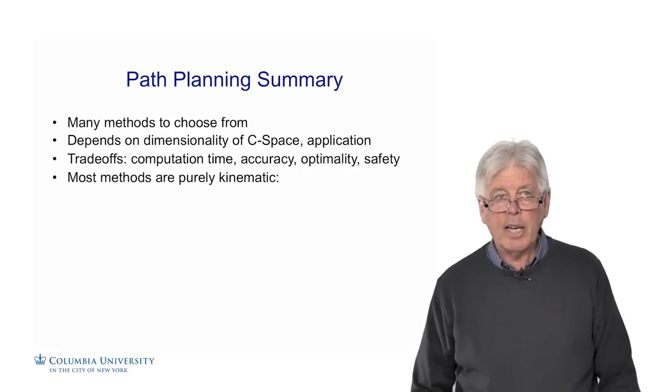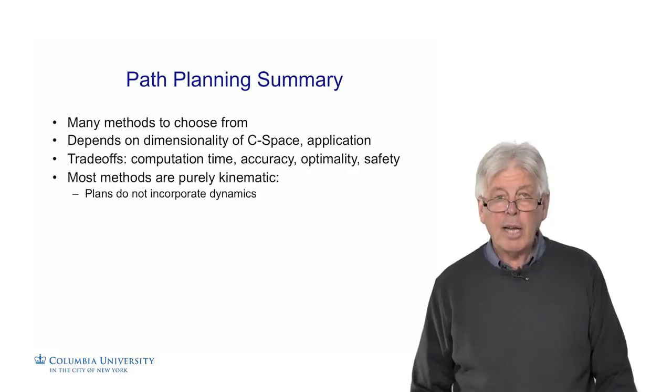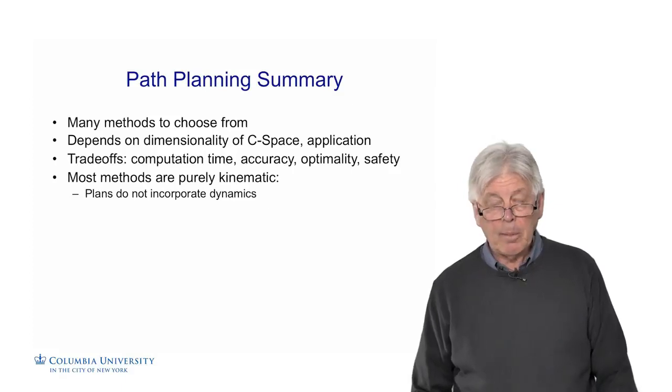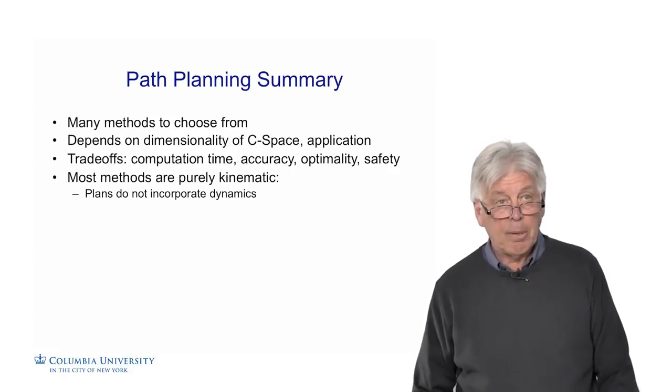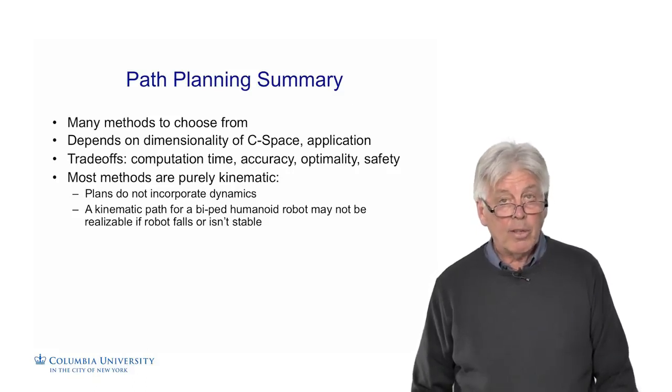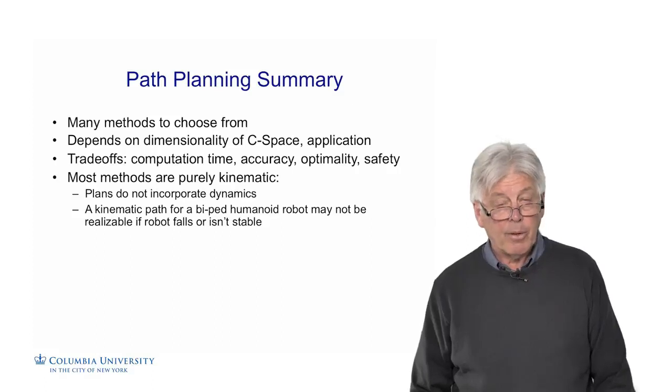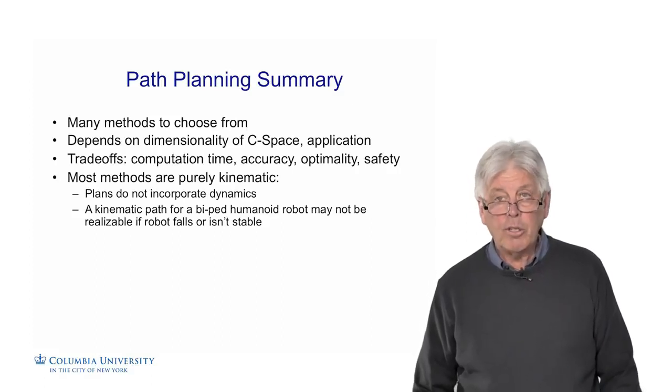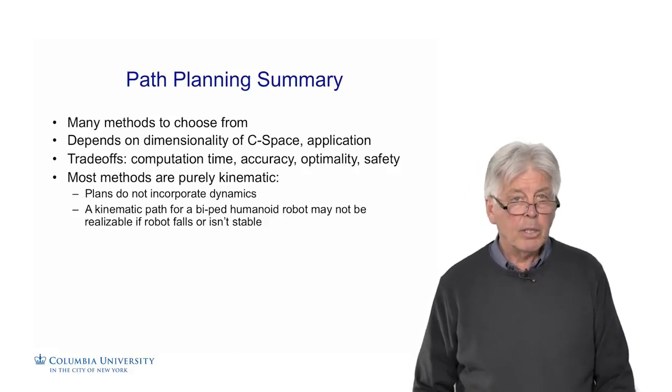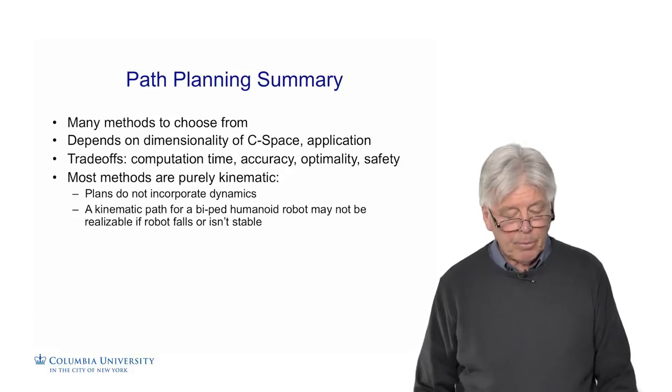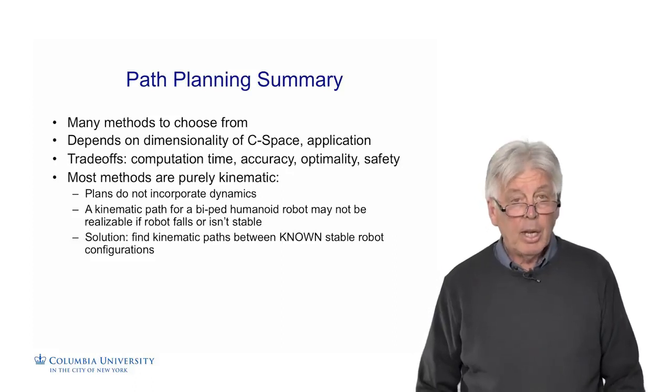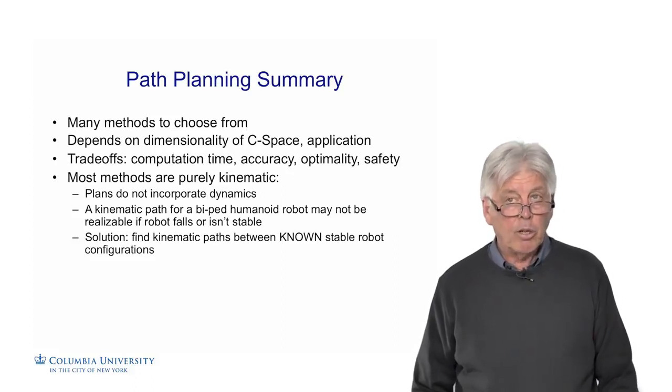Most of the methods we talked about today are purely kinematic. They do not incorporate dynamics. When we talk about humanoid robots, we have a real problem. We can plan paths for a multi-jointed bipedal robot, but it may not be realizable if the robot will fall, if one of those configurations is where it falls and it's on the ground. We want to be able to have robots move with other constraints. In this case, there's a constraint due to stability and gravity. So how do we include that? One simple solution we can do is we can find kinematic paths between known stable robot configurations.